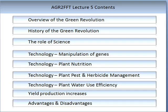In this lecture we will start with an overview of the Green Revolution, followed by some detail of its history and how it came about. Across this history we will learn about the role of science and technology, which included the manipulation of genes, increases in our knowledge of plant nutrition, pest and herbicide management, and plant use efficiency. All of this technology led to yield prediction increases, and we will touch on the advantages and some disadvantages of the Green Revolution.